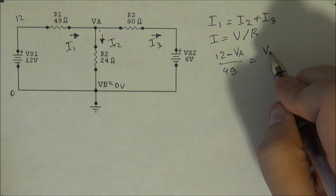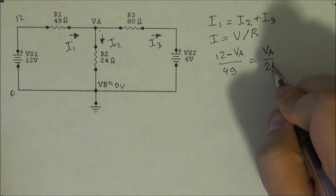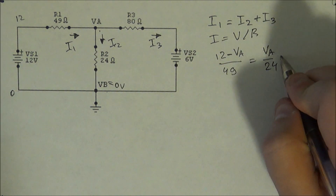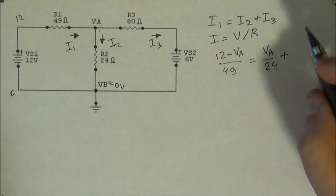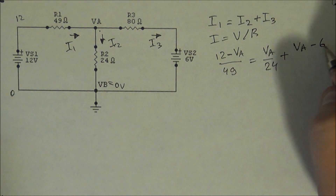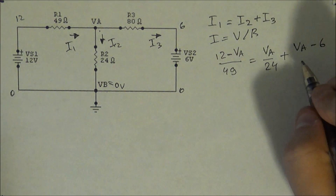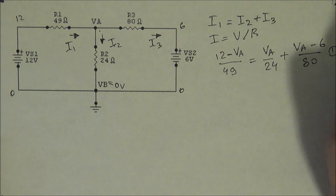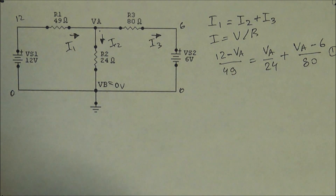I2, you only have VA divided by 24. Obviously it's VA minus VB, but VB is 0, so we can leave it as such. And I3 is equal to VA minus 6, since you have a 6 volt source and 0 volts, divided by 80 ohms. So this is your only equation for this case.